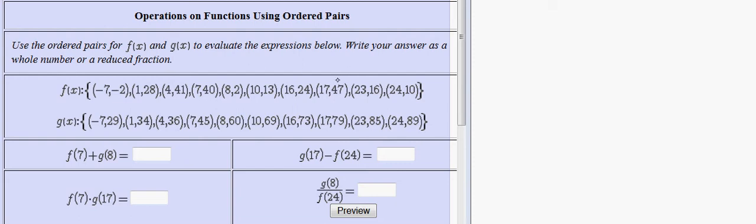In this problem, we're given two functions, f and g, as a set of ordered pairs, and we're asked to add, subtract, multiply, and divide them for various values of x.